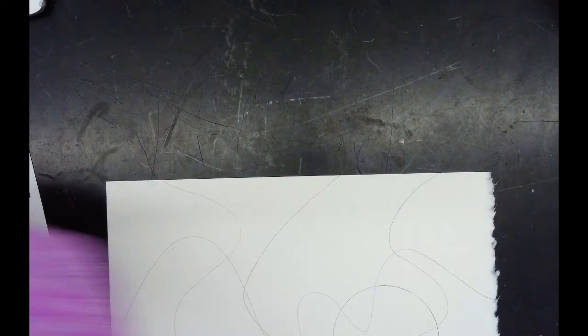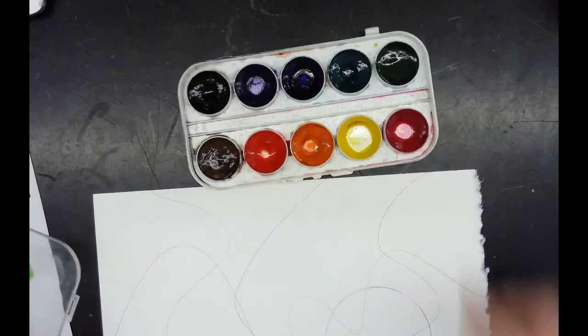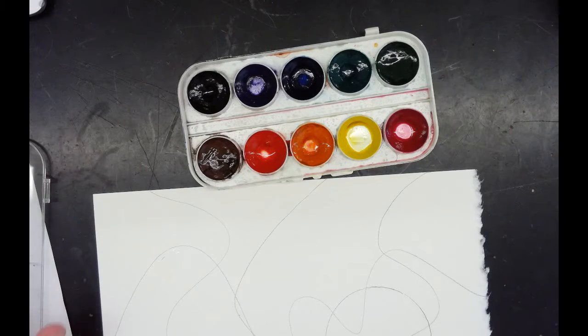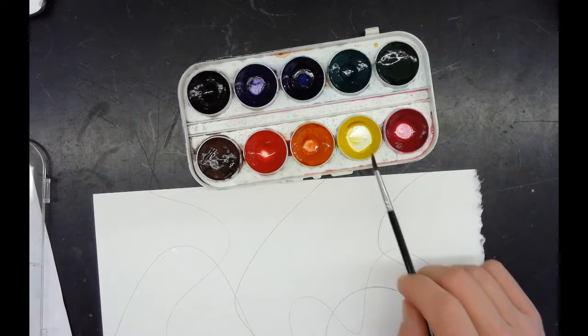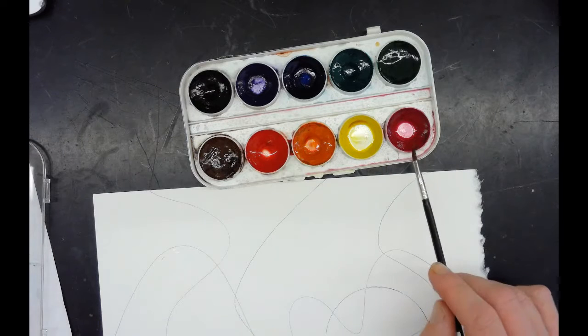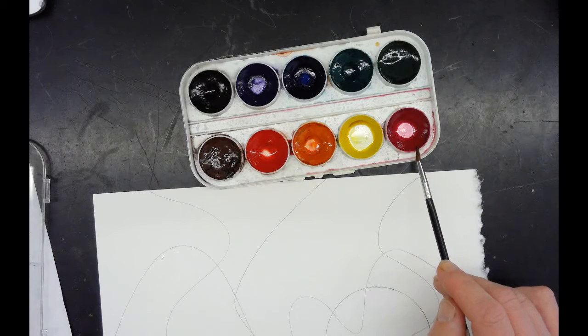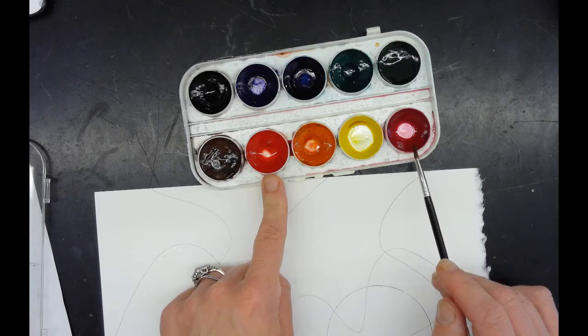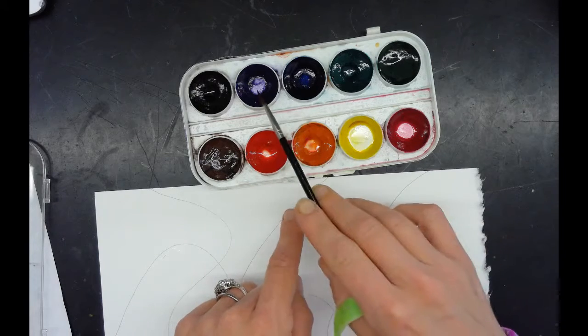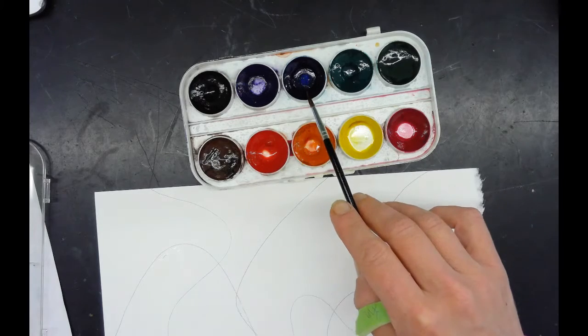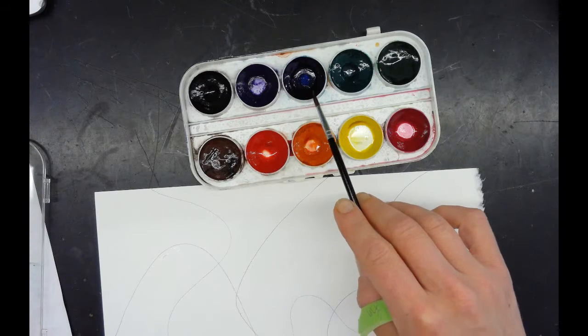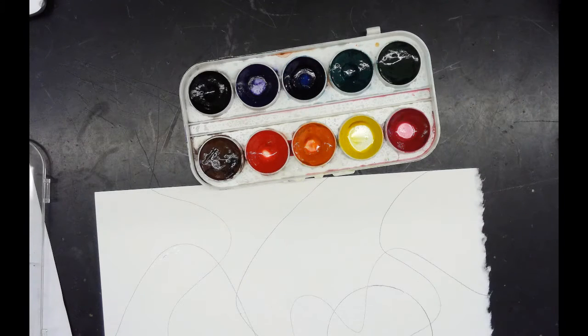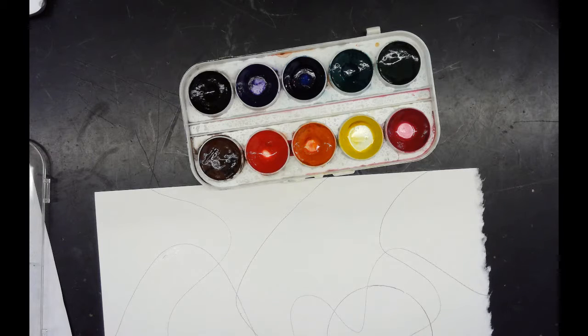So now I want to pick a nice strong color, but one from the color wheel. I don't want to use yellow because that's the weakest, and I don't want to use brown and black. So I can either use this cool red which is more like a magenta, I can use the warm red, I could use either of the greens, and I have the purple and a mixing blue like a cyan, and then an orange. So I think for today I'm going to use the blue.